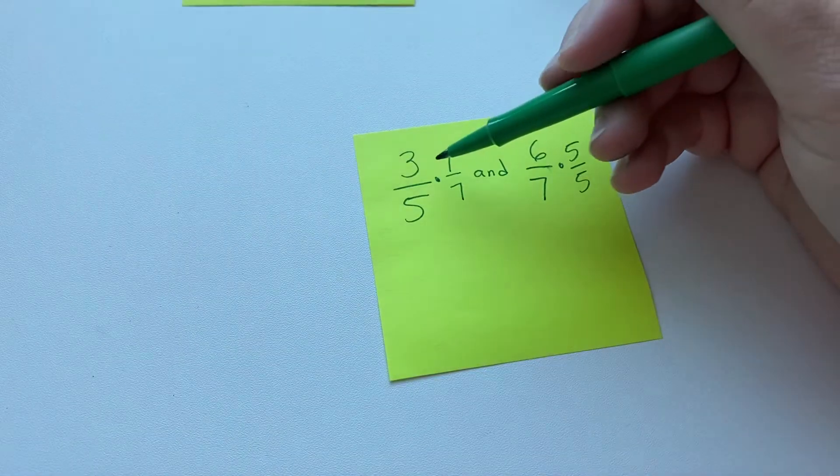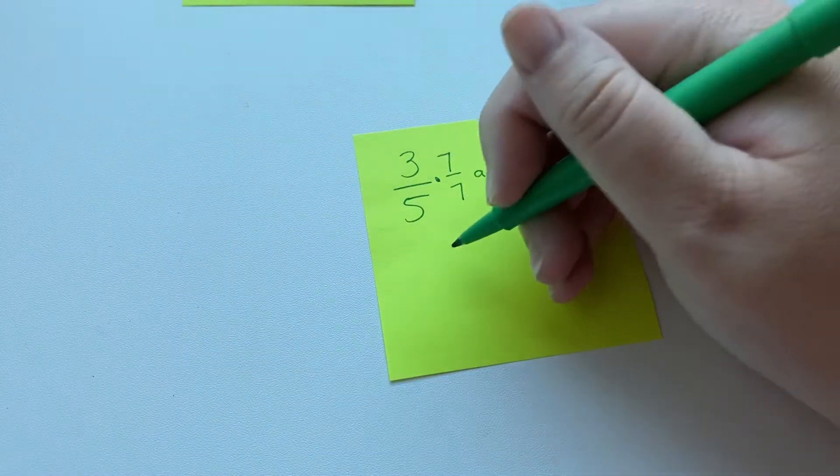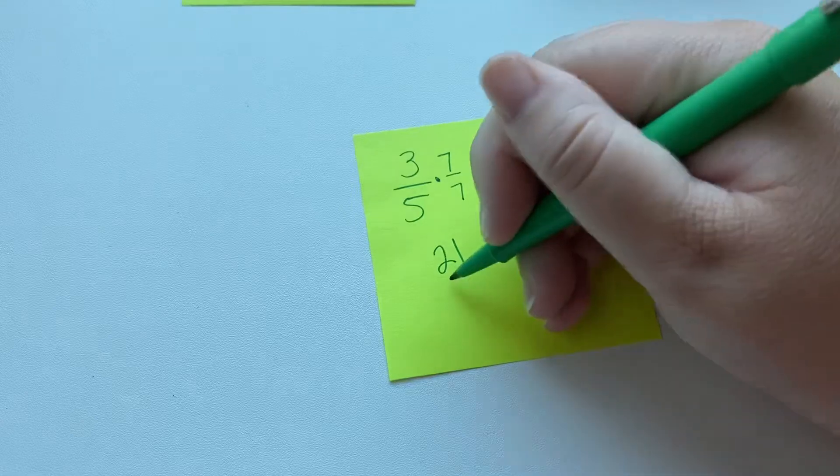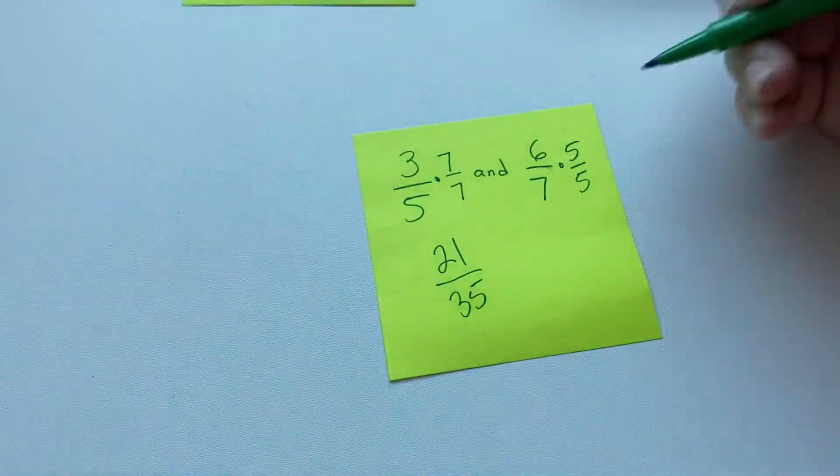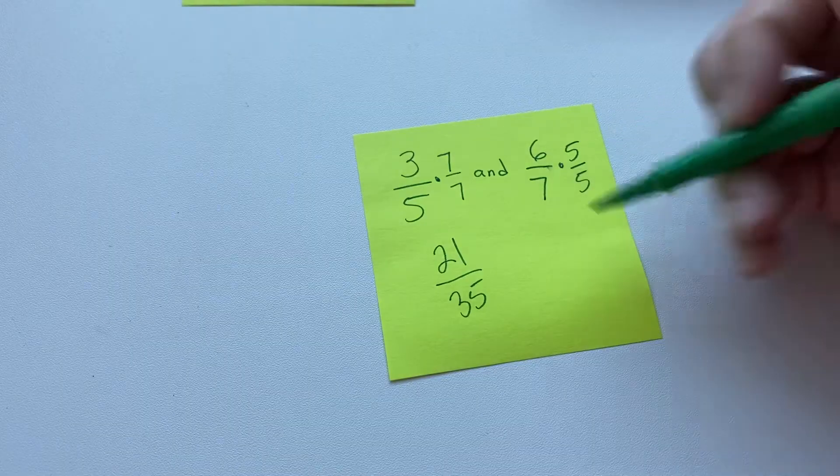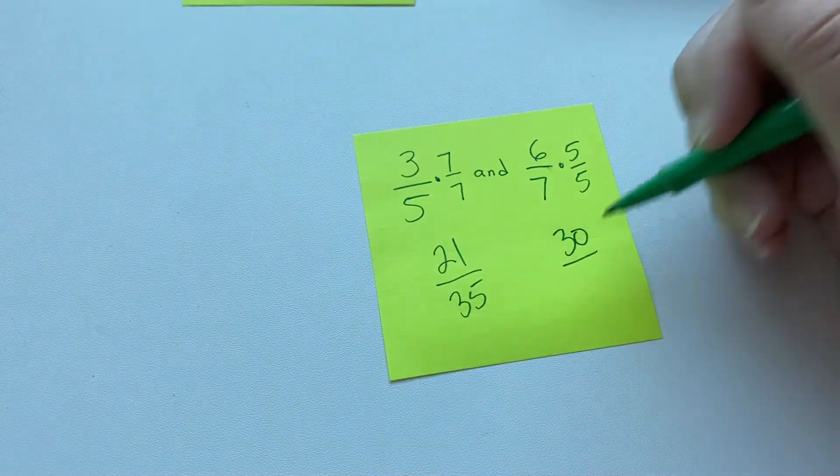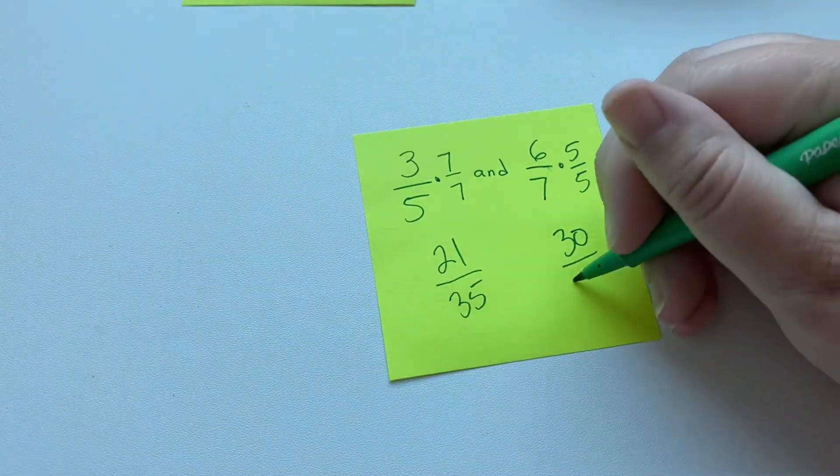And then three times seven is 21. And five times seven is 35. Six times five is 30. And seven times five is 35.